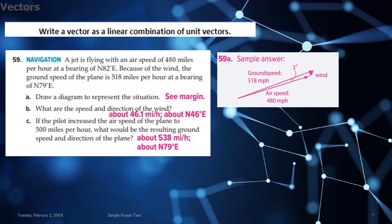Moving on, the next learning objective is to write a vector as linear combination of unit vectors. So for question 59, you see in pink the solution for each part of the question in detail.